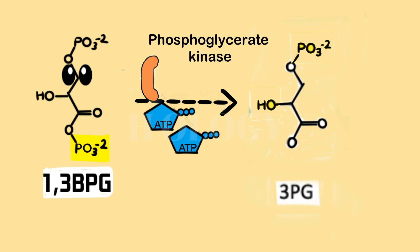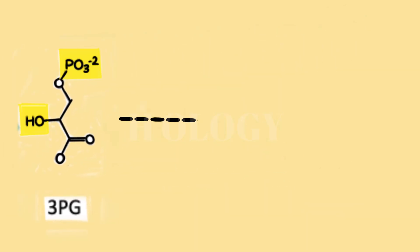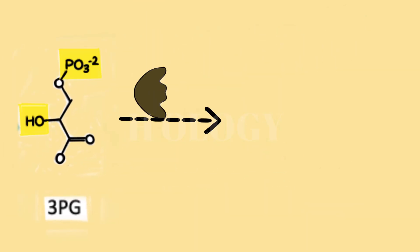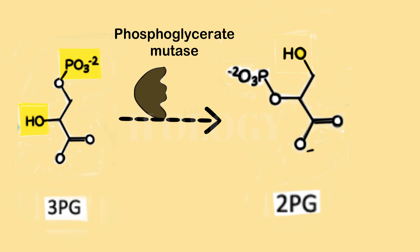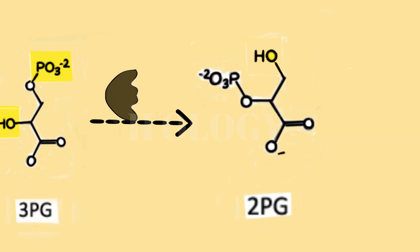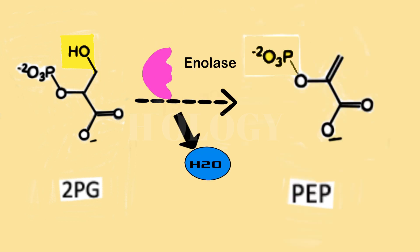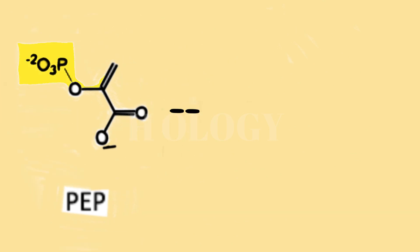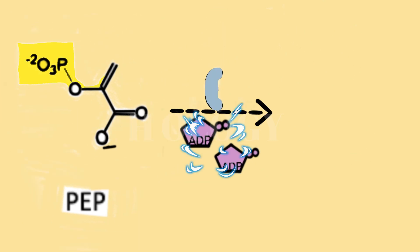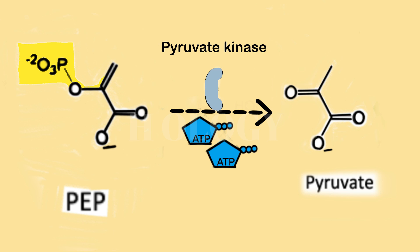Step 8: The enzyme phosphoglycerate mutase converts 3-phosphoglycerate into 2-phosphoglycerate. Step 9: The enzyme enolase removes water from 2-phosphoglycerate, resulting in the formation of phosphoenolpyruvate. Step 10: Lastly, the enzyme pyruvate kinase transfers a phosphate group from phosphoenolpyruvate to ADP, generating ATP and pyruvate.